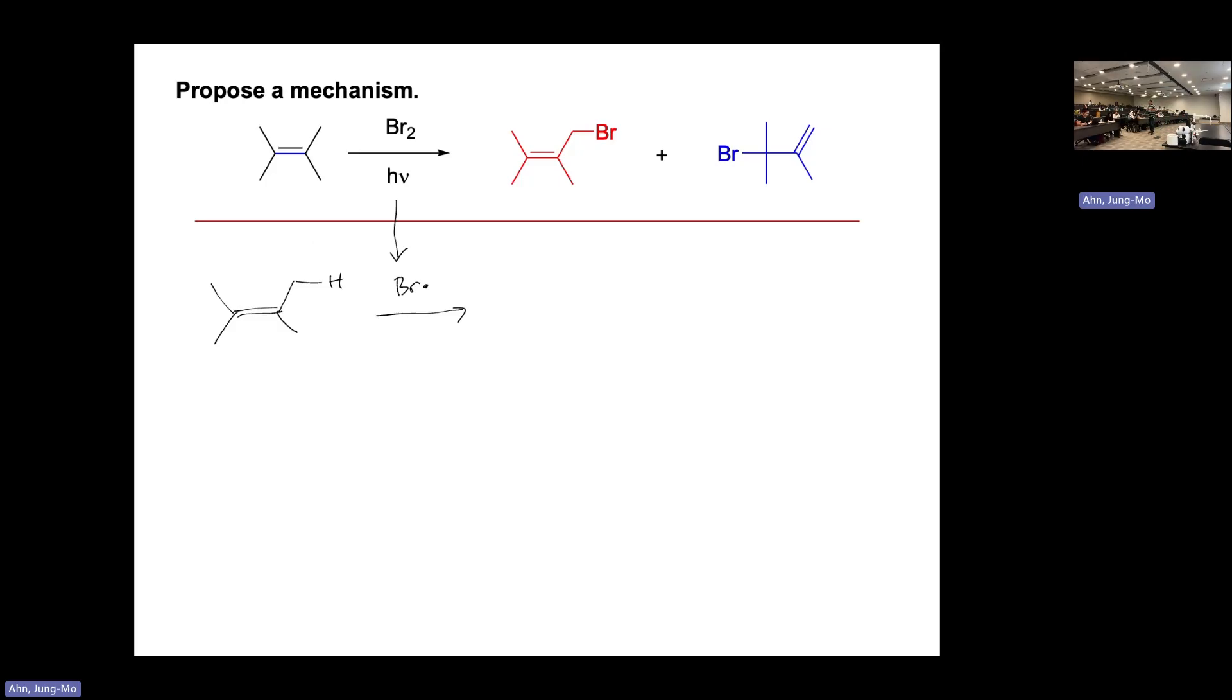For a radical, we go into the first propagation step, meaning that it's trying to abstract hydrogen from the beginning molecule, which is this molecule. There's no hydrogen there.